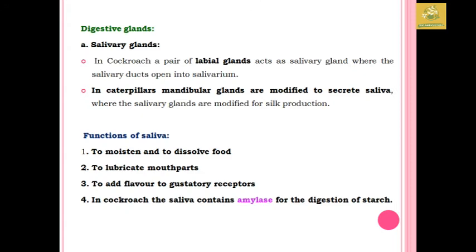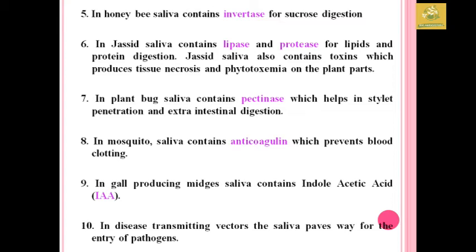The digestive glands include the salivary glands. In cockroaches, these are known as a pair of labial glands which act as salivary glands, where the salivary duct opens into the salivarium. In caterpillars, the mandibular glands are modified to secrete saliva, while the salivary glands themselves are modified for silk production. The functions of saliva include moistening and dissolving the food, lubricating the mouthparts, adding flavor to the gustatory receptors, and producing enzymes for digestion. In cockroaches, saliva contains amylase used for starch digestion. In honeybees, saliva contains invertase used for sucrose digestion.